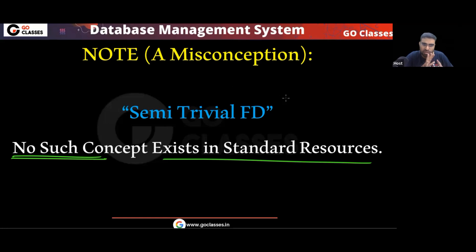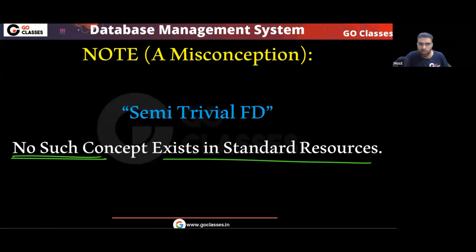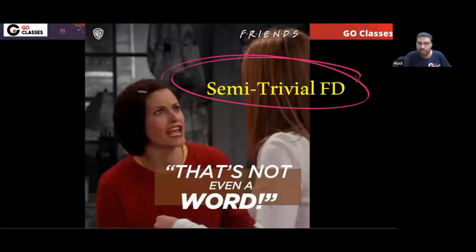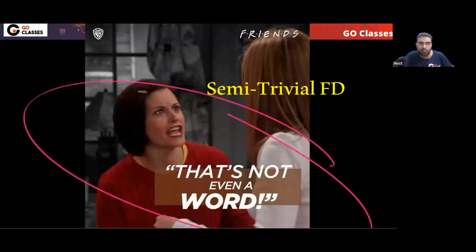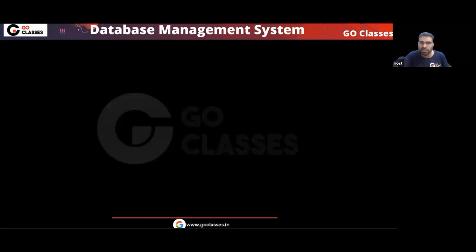The standard resources we are covering include Ullman, Navathe, Korth, and Ramakrishna. In some coaching institutes, the concept of semi-trivial functional dependency is taught, but let me tell you, no such concept exists in any standard resource. So whatever we have seen — trivial functional dependency, non-trivial functional dependency — everything is from standard resources.